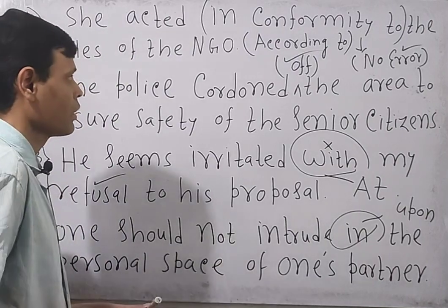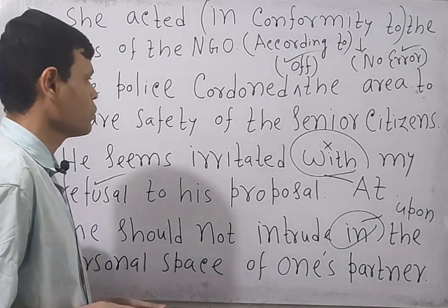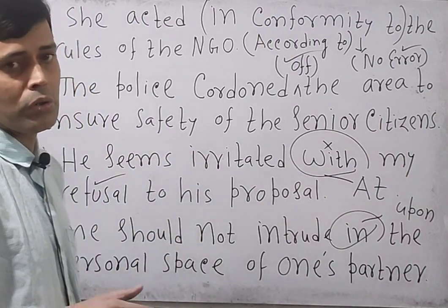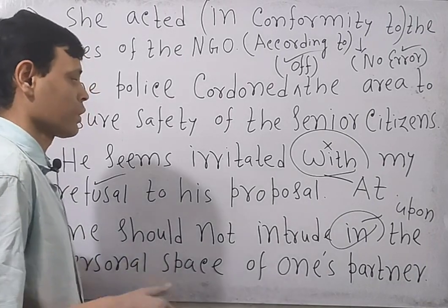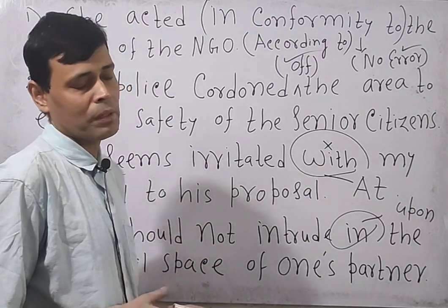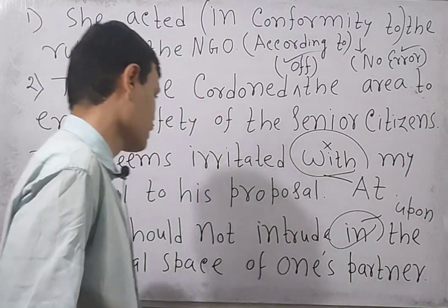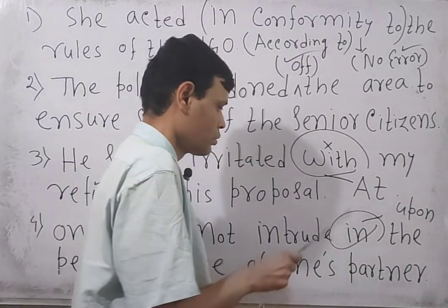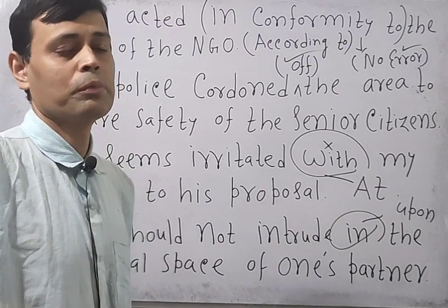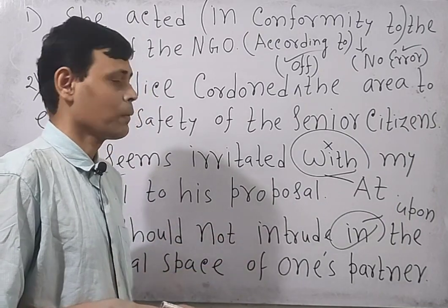To summarize: Question 1 contains no error — 'in conformity to' means 'in accordance with' or 'according to,' which is totally correct. In Question 2, the error is that it should be 'cordoned off,' meaning 'protected.' In Question 3, 'irritated' is fine, but since 'refusal' is a thing and not a person, the preposition should be 'at' instead of 'with.' In Question 4, with the word 'intrude,' the fixed preposition rule requires 'upon.' In the exam, select the option where the correct preposition is given.